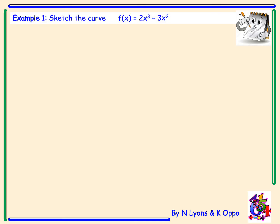Example 1: Sketch the curve f(x) = 2x³ - 3x². Before we start we should have an idea of what that looks like in our head. It's a positive cubic, so we're looking for two turning points — a maximum and a minimum turning point — but where are they?